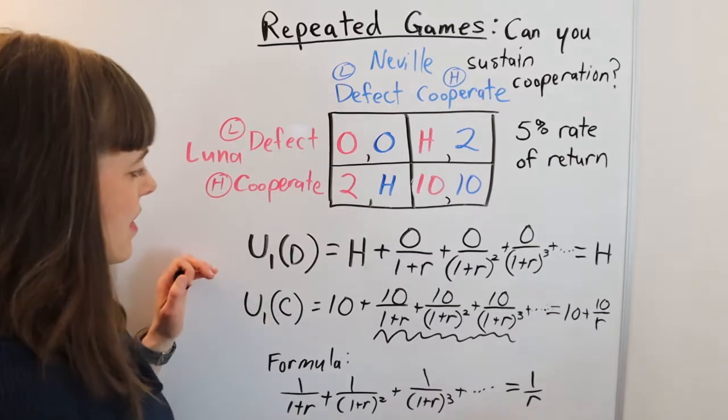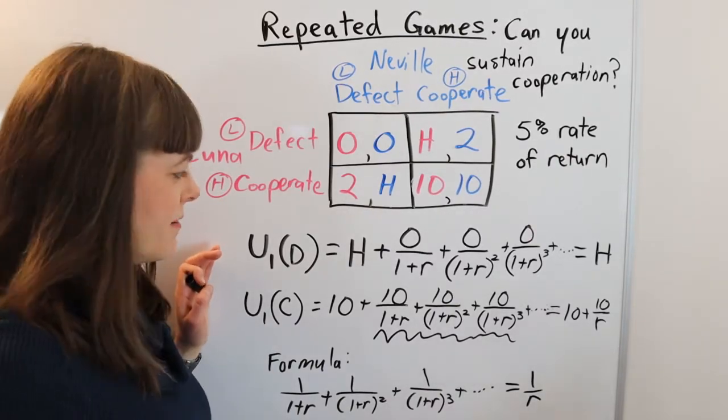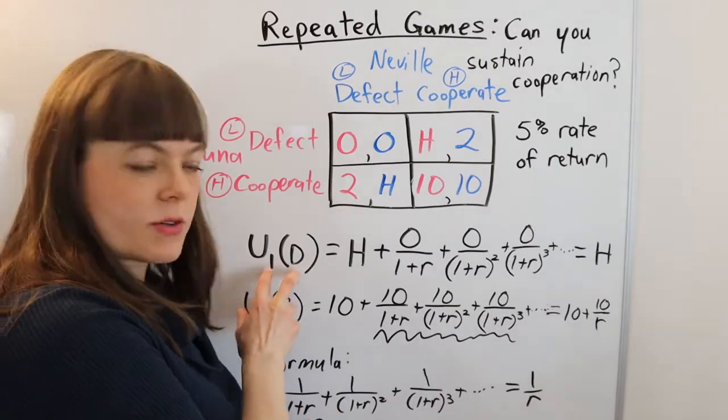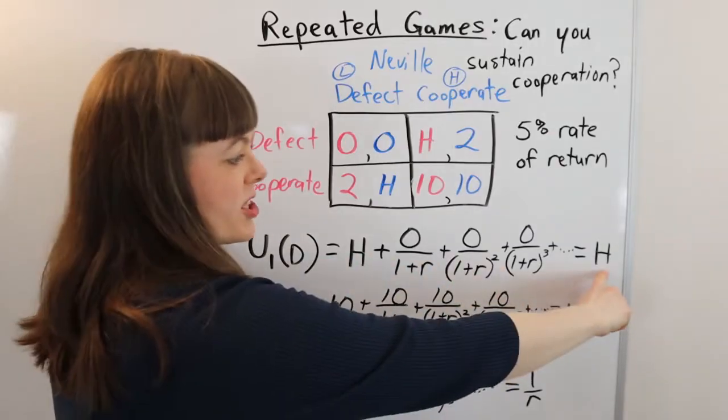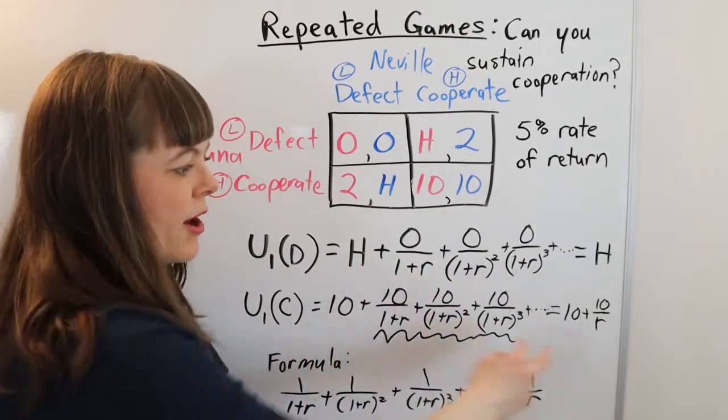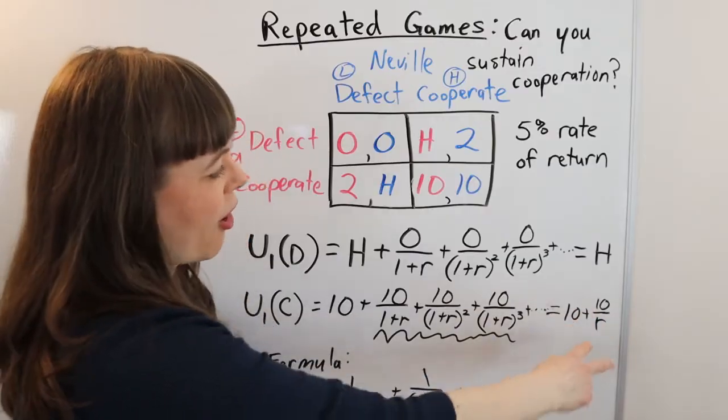So the question is, when is Luna going to defect? She's going to defect when her payoff from defecting, which is H, is greater than her payoff from cooperating, which is 10 plus 10 over r.